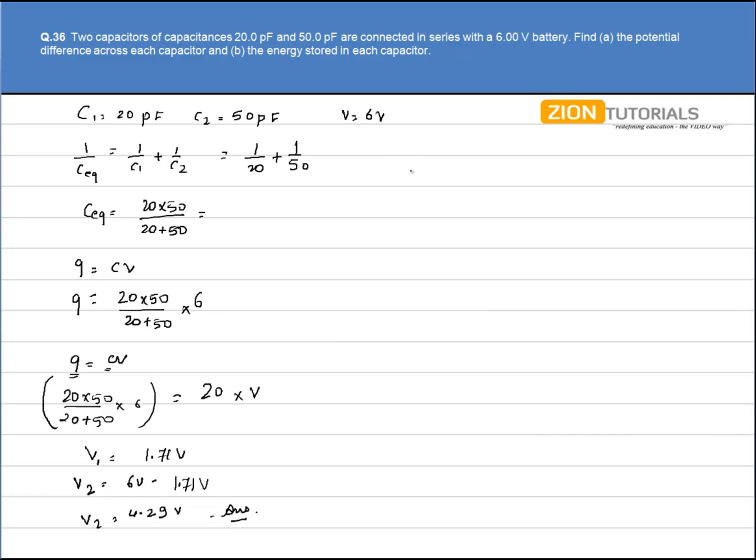Now in part b, we have to calculate the energy stored in each capacitor. Energy is given by half of Q square by C.